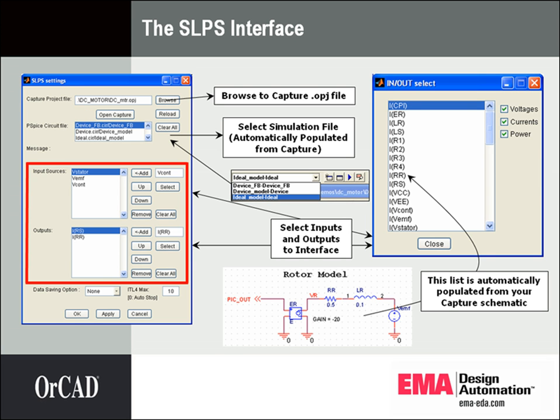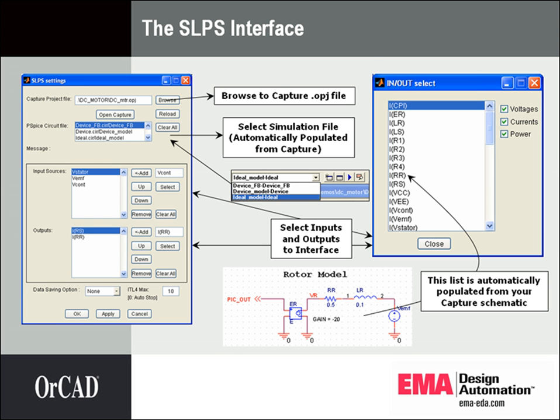Here you choose input and output sources that you'd like to use. By hitting the select button, you bring up the in-out select list, which shows all the available components in your PSPICE circuitry. This eliminates the need to remember the names of the signals — you can just browse through them live from the PSPICE window.